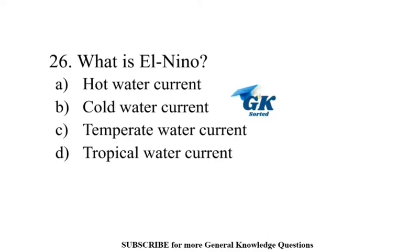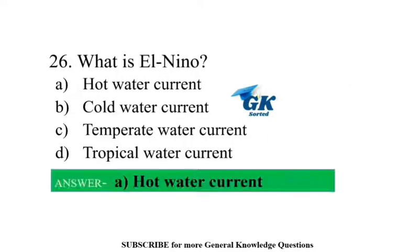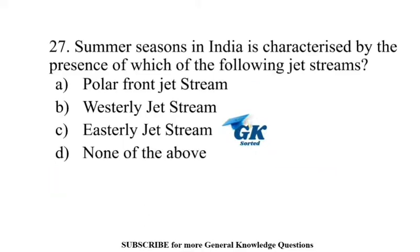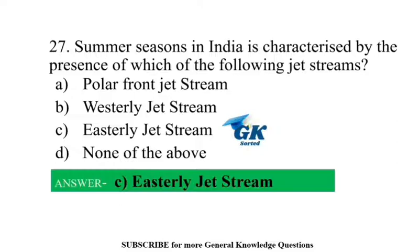What is El Niño? El Niño is a hot water current. The summer season in India is characterized by the presence of which jet stream? The easterly jet stream.